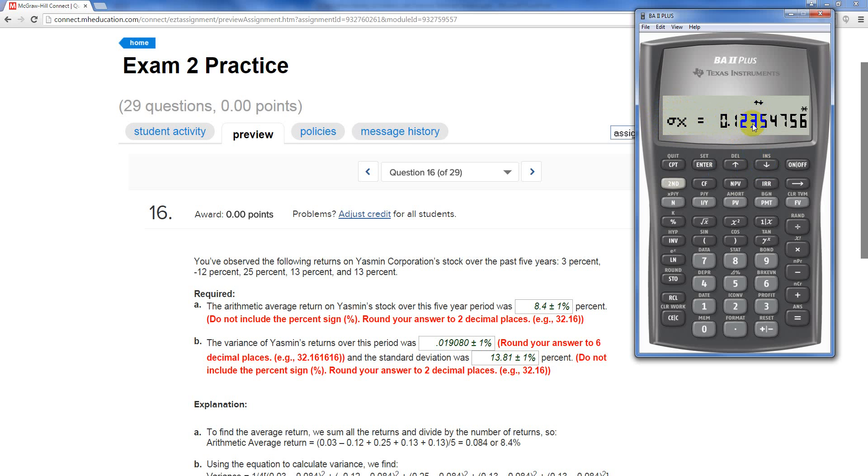This is a population standard deviation. We do not have the entire population of data. We only have a sample. Therefore, it would be inappropriate to use this number. The number we want is the sample standard deviation.